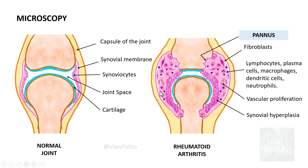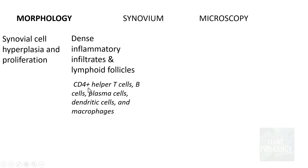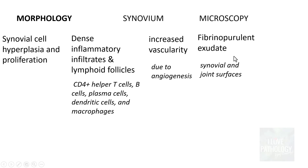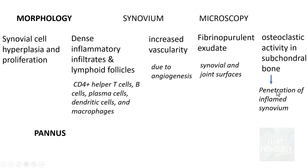As discussed in the pathogenesis, there is activation of osteoclasts leading to erosion of the bone surface, which finally leads to bone resorption. Summarizing the microscopic findings: there is synovial hyperplasia and proliferation; dense inflammatory infiltrates and sometimes lymphoid follicles, predominantly including CD4-positive helper T cells, B cells, plasma cells, dendritic cells and macrophages; increased vascularity due to angiogenesis; fibrinopurulent exudate in the synovial tissue and on joint surfaces; and osteoclastic activity in the subchondral bone.